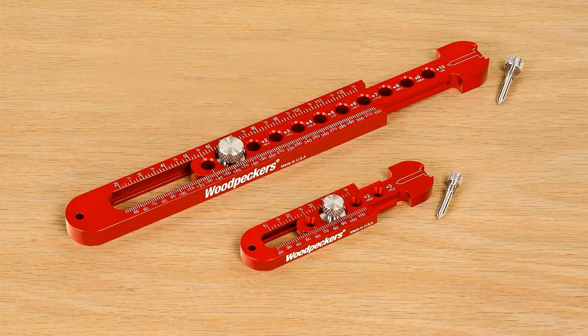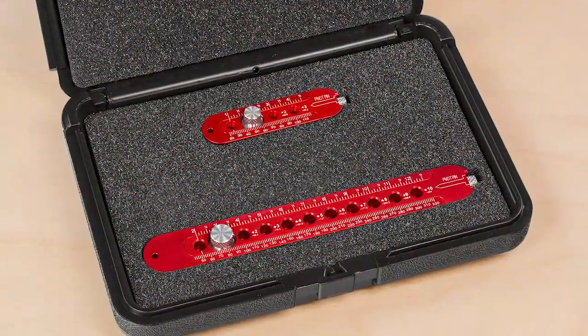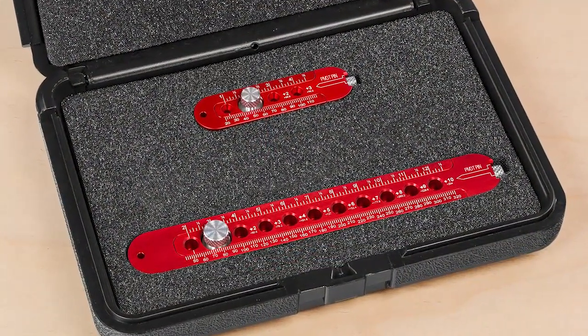When you order both sizes, your pair of pocket compasses will come nestled in a protective plastic case with a custom cut foam interior.